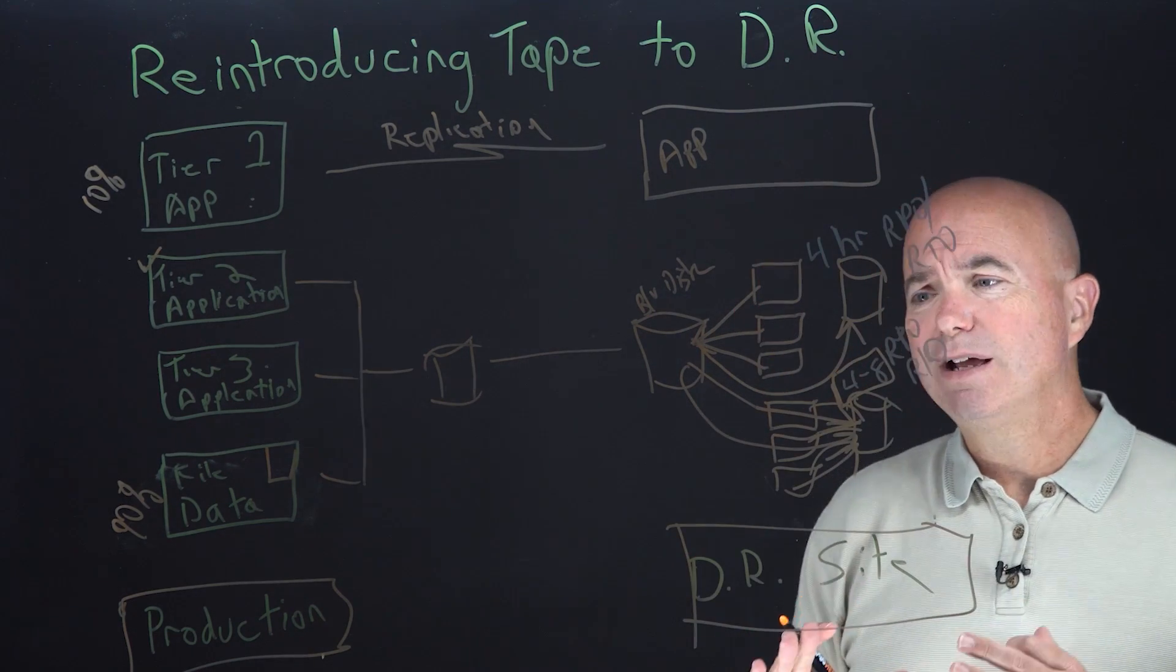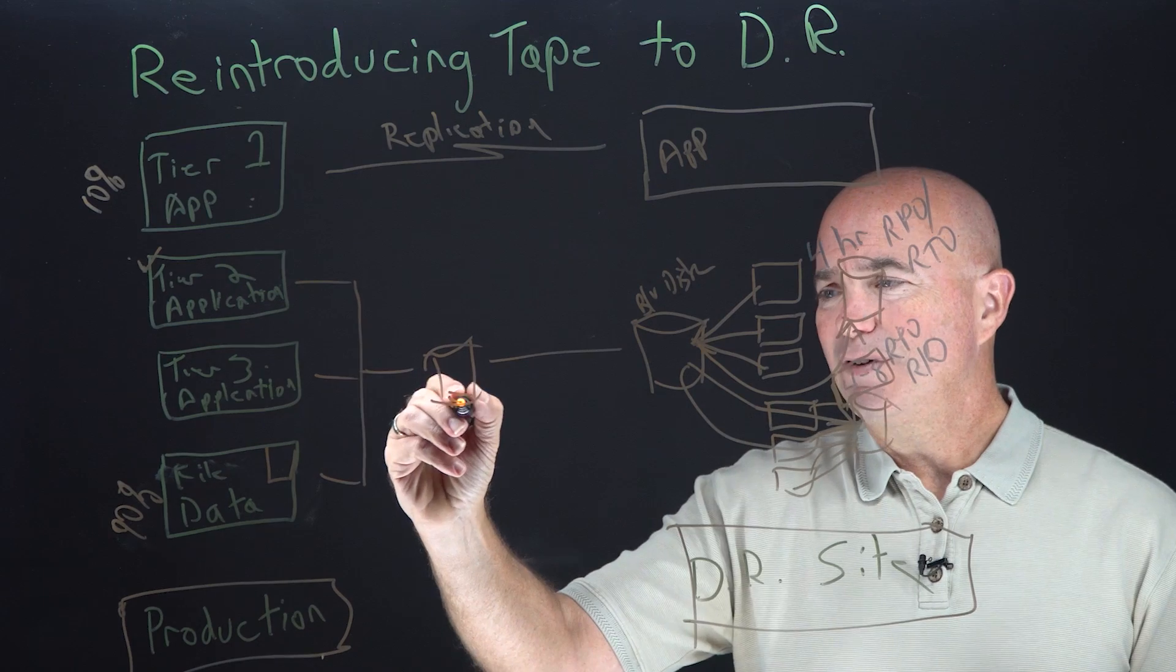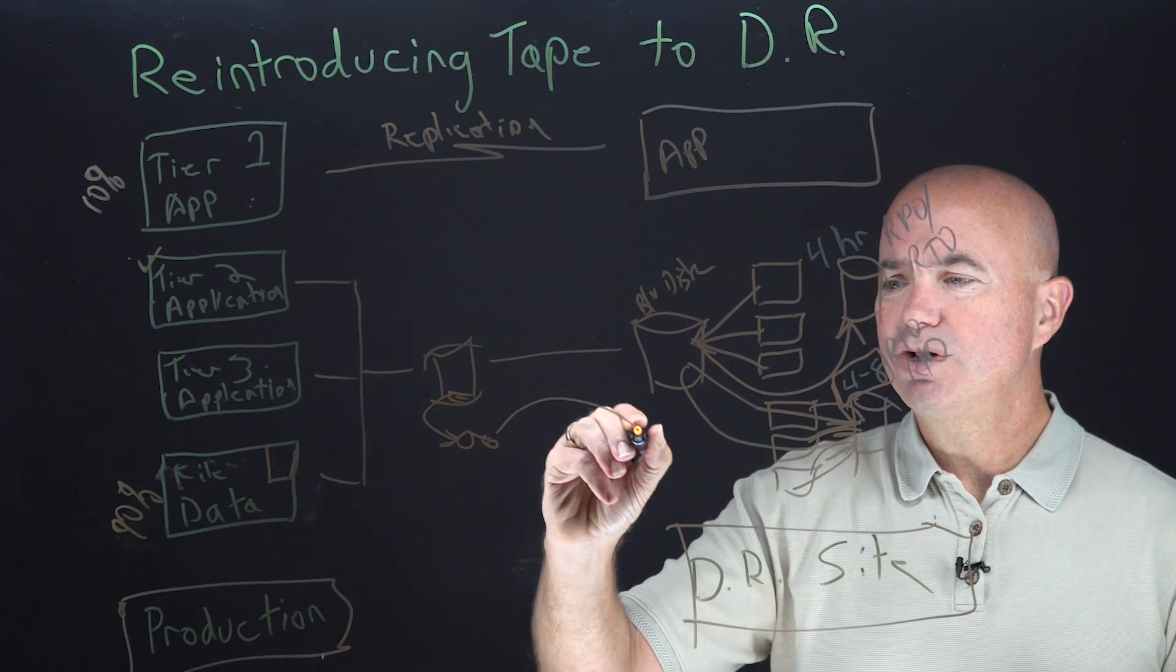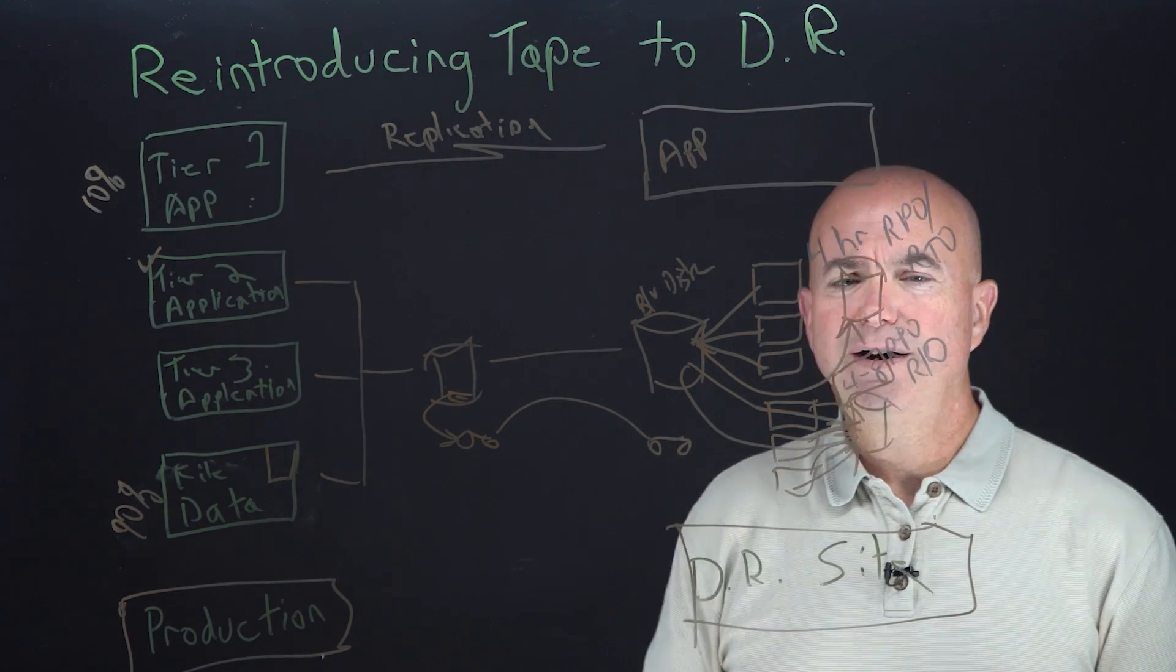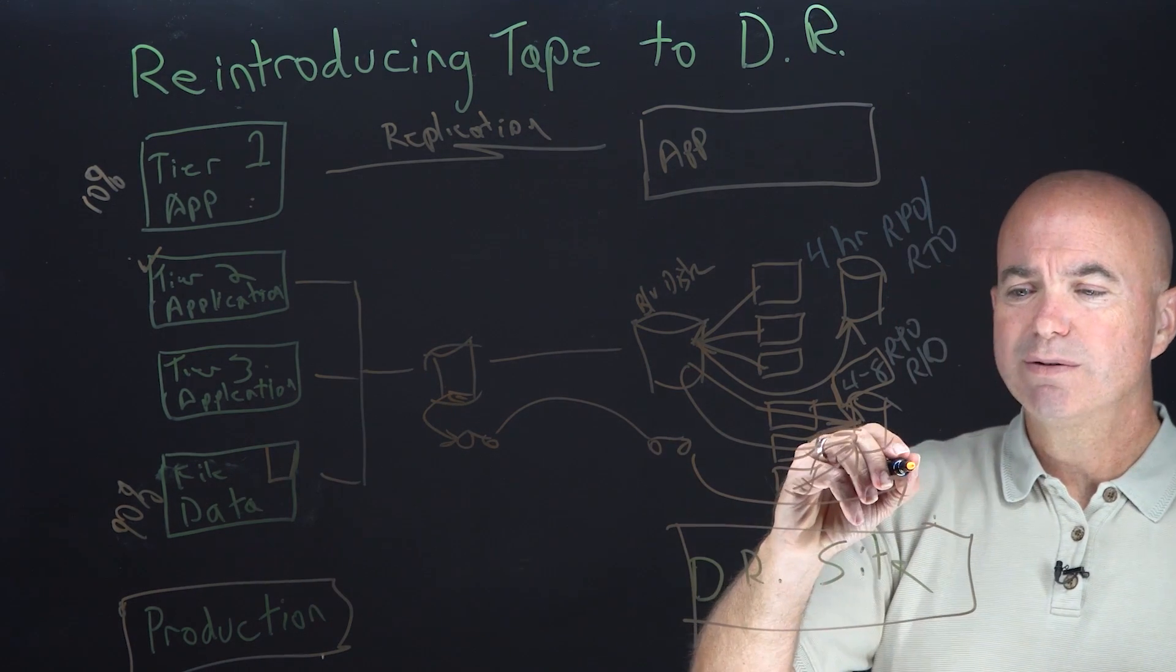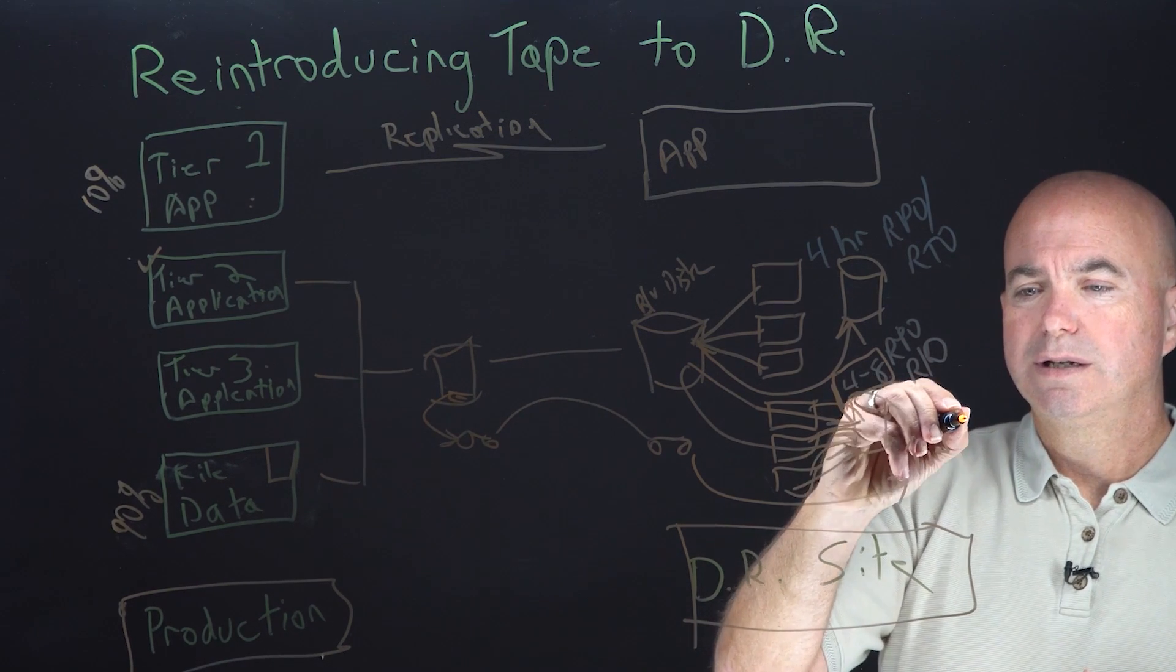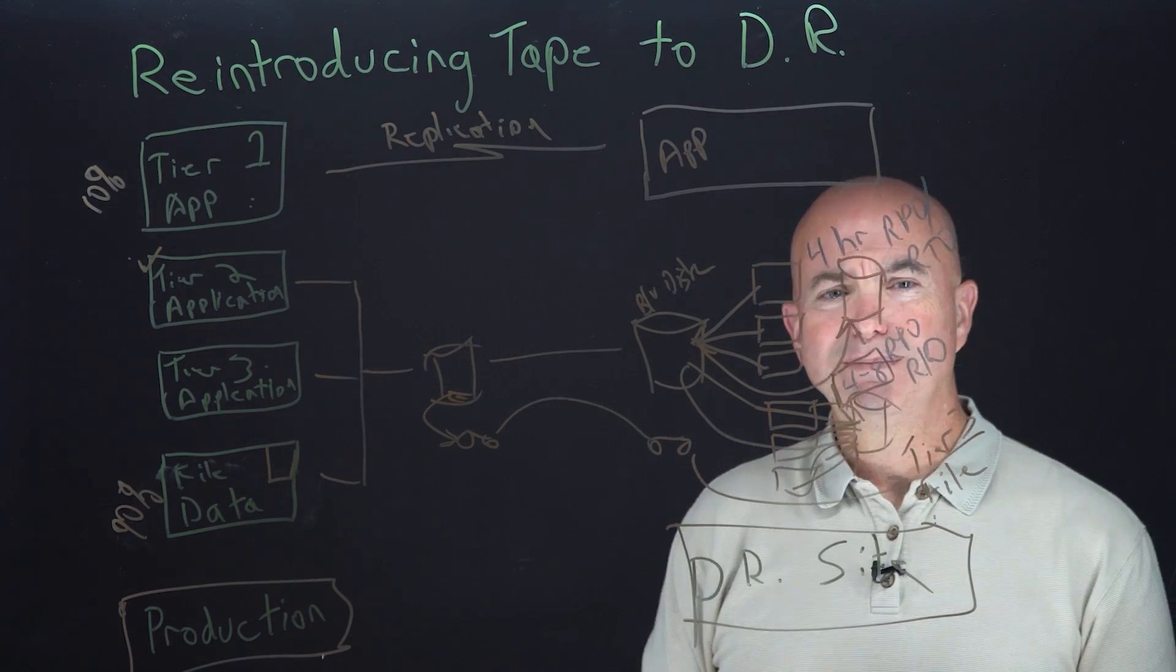So if we look at that, what we could do is either, again, in our last video, we showed data spooling off to tape. Those tapes could be shipped to the DR site. So in this scenario, I could actually start my tier three and my unstructured data recovery all from tape. So tier three and files could all come from tape.